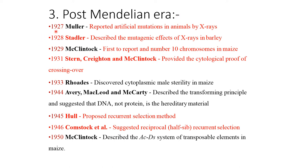In the post-Mendelian era, in 1927 Muller reported artificial mutation in animals by X-ray. In 1928, Stadler described the mutagenic effect of X-ray in barley. In 1929, McClintock was first to report the number of chromosomes in maize. In 1931, Stern and McClintock provided the cytological proof of crossing over.